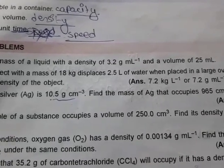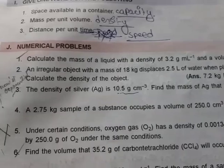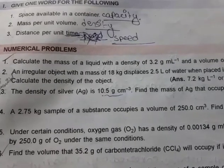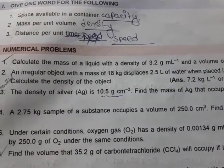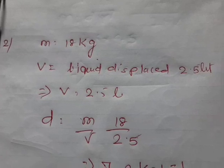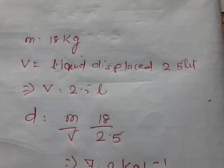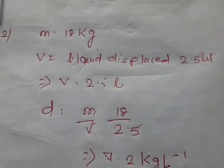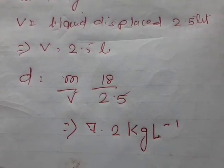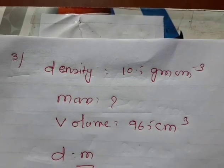You see in numerical number 2, an irregular object with a mass of 18 kg displaces 2.5 liters of water when placed in a large surface container. Calculate the density of the object. In this case, volume of a body is equal to liquid displaced. Mass is 18 kg, volume is 2.5 liters. Density equals mass by volume: 18 divided by 2.5. The answer will come as 7.2 kg per liter.